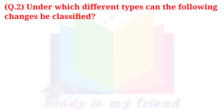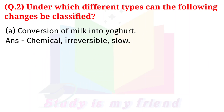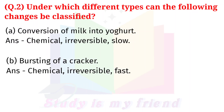Question 2: Under which different types can the following changes be classified? A. Conversion of milk into yogurt. Answer: Chemical, Irreversible, Slow. B. Bursting of a cracker. Answer: Chemical, Irreversible, Fast.